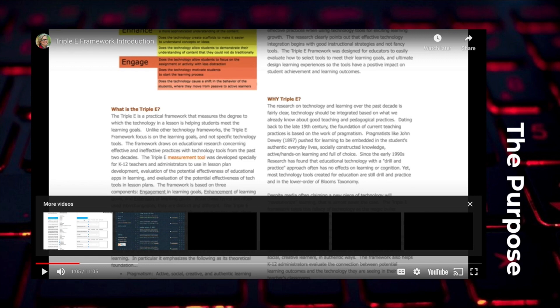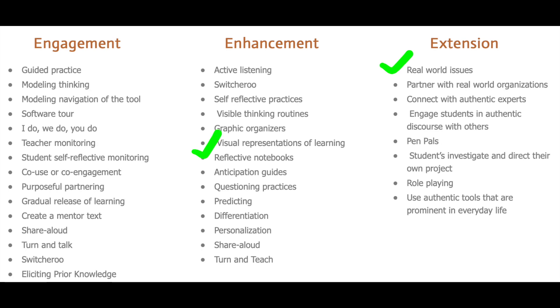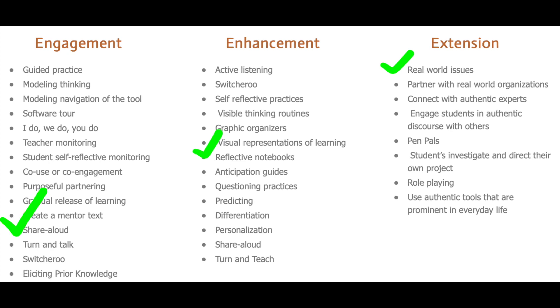For instance, a lesson on weather prediction in a science class can incorporate all three of the E's. Start off with extension and have the students look at the current forecast for the week — this ties the lesson into real world issues. Then, moving into enhancement by allowing the students to use reflective notebooks to write down their analysis of how correct or incorrect the weather predictions were for each day. Finally, we want to end with engagement, and this area is where technology is incorporated.